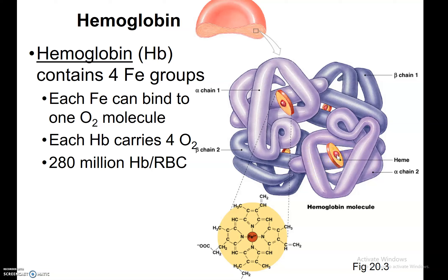Each individual hemoglobin molecule has four chains — four protein chains: two alpha chains, alpha chain one and alpha chain two, and then two beta chains, beta one and beta two. All four chains have the same heme group in the center. Alpha and beta have slightly different conformations, but you don't need to worry about that.